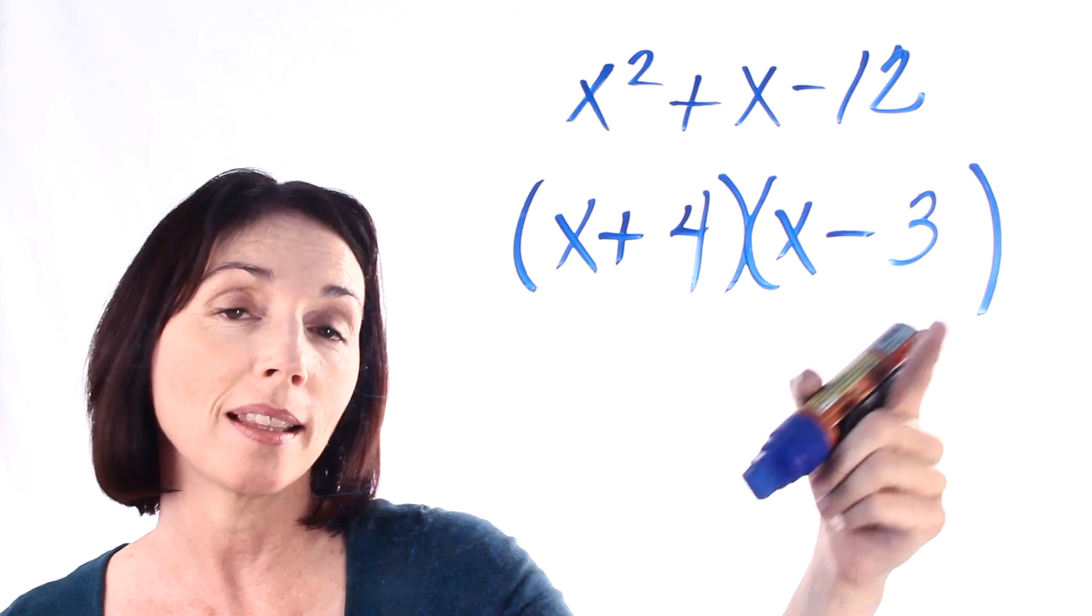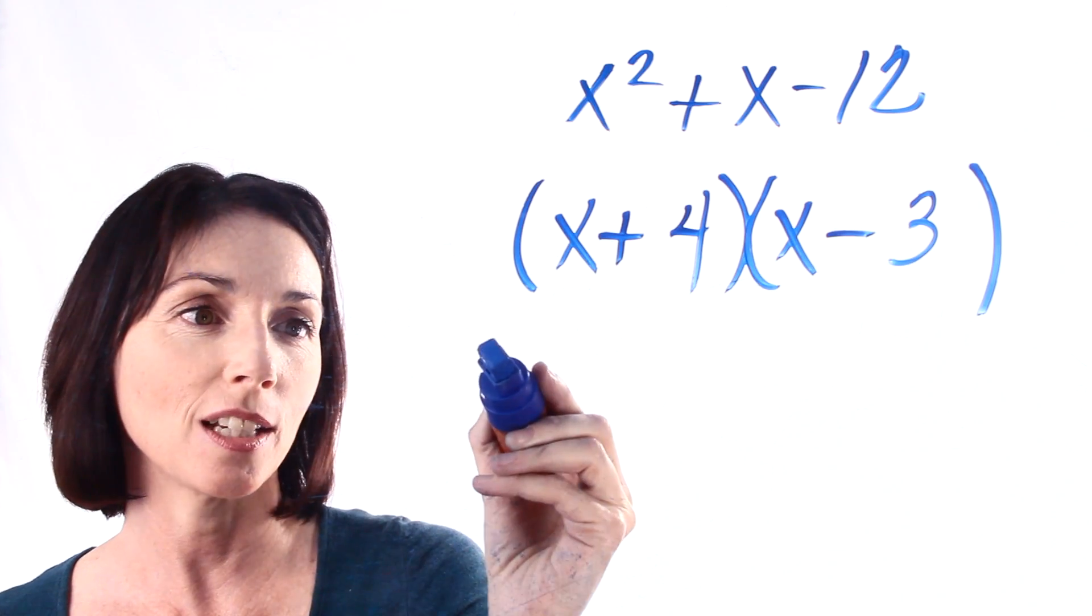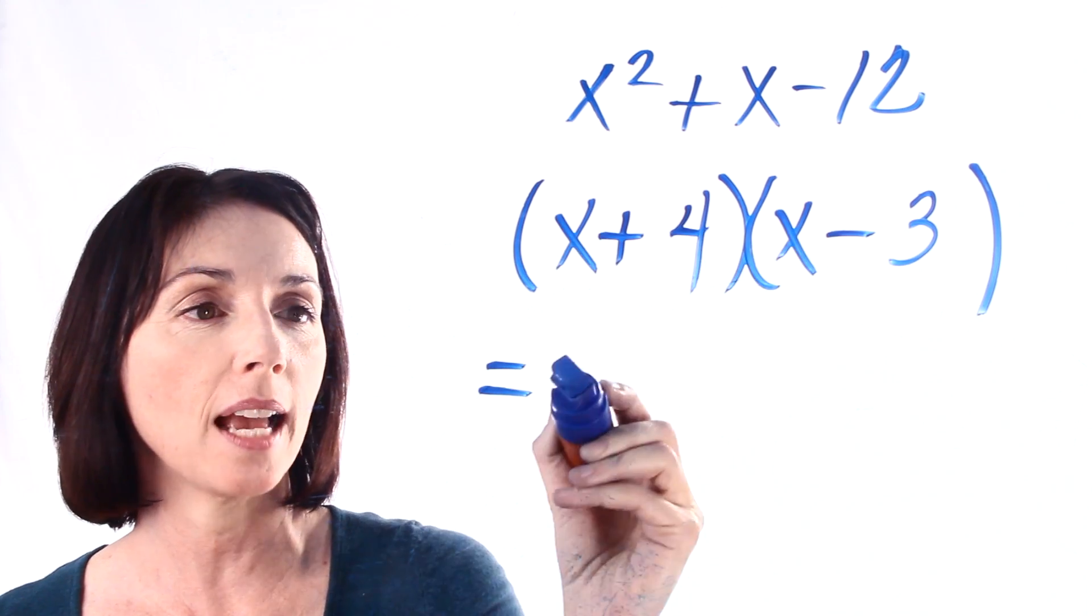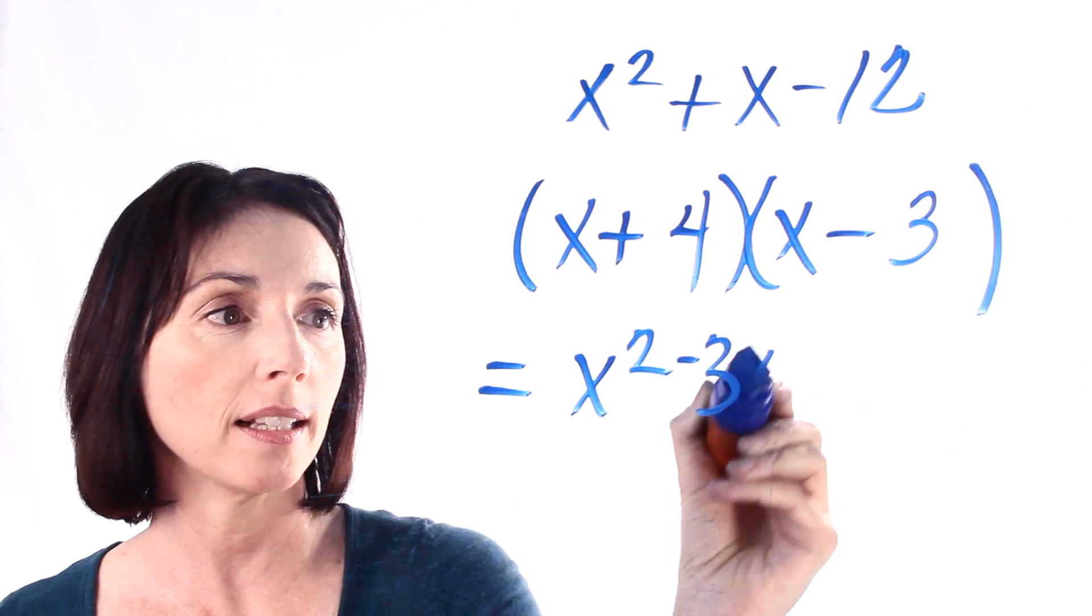Now I'm going to multiply this back out again using the FOIL method and you'll see that it's the right factorization. So x times x gives us x squared. x times minus 3 is minus 3x.